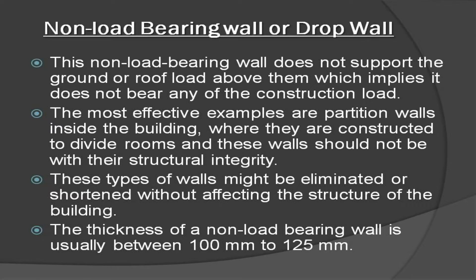Non-load-bearing wall, or drop wall: this wall does not support the ground or roof load above it, which implies it does not bear any of the construction load. The most effective examples are partition walls inside the building, where they are constructed to divide rooms. These types of walls might be eliminated or shortened without affecting the structure of the building. The thickness of a non-load-bearing wall is usually between 100 mm to 125 mm.